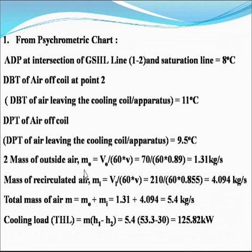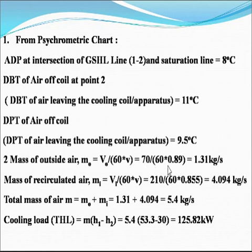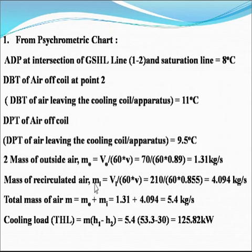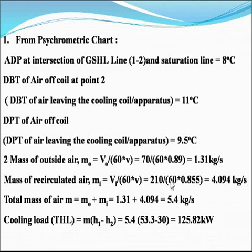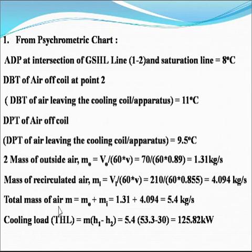The mass of outside air supplied is mo, equal to total volume divided by 60 times specific volume: 70 divided by 60 times 0.89, which equals 1.31 kg per second. The mass of recirculated air mi equals vi divided by 60 times specific volume: 210 divided by 60 times 0.855, which equals 4.094 kg per second. The total mass of air is the sum of fresh outside air and recirculated inside air, giving 5.4 kg per second.